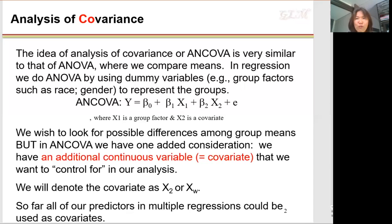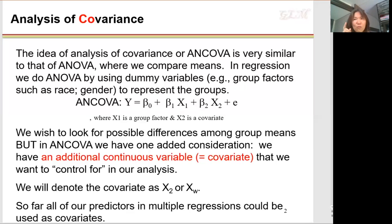So if you have two categorical factors, it is a two-way ANOVA model. If you have only one categorical variable in the model, it is a one-way ANOVA model. Before this lecture, we have looked at the one-way ANOVA model.